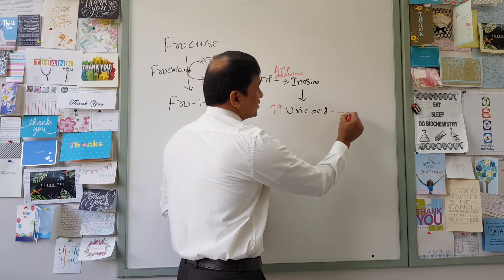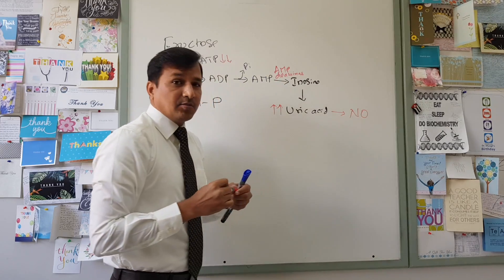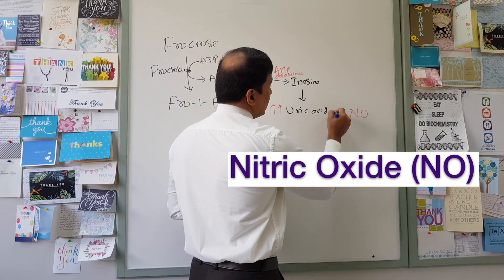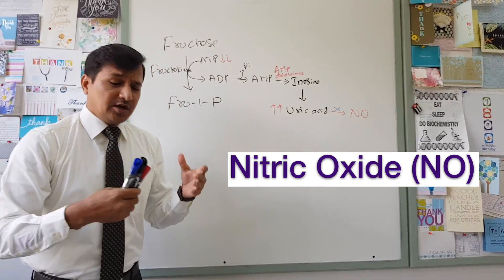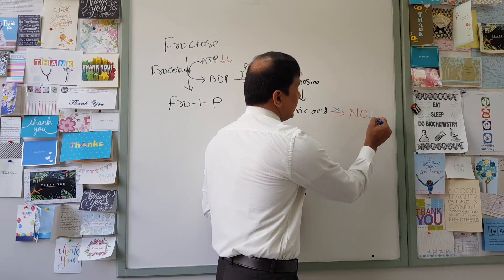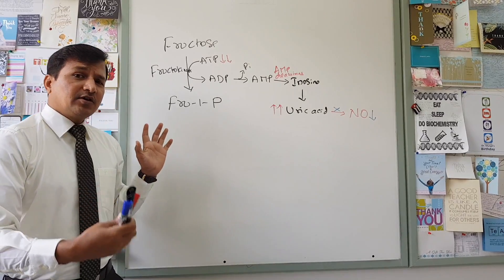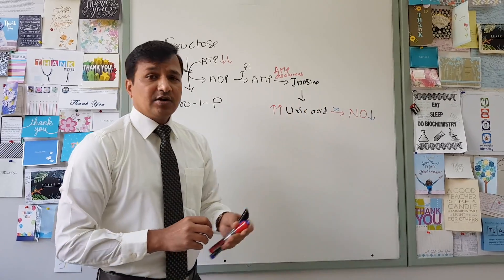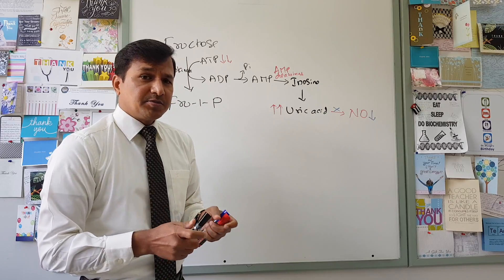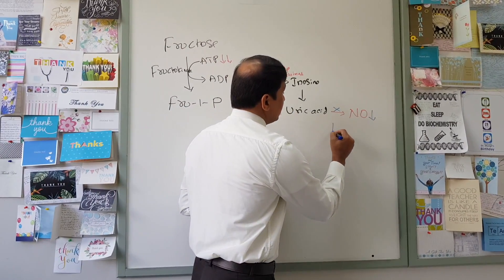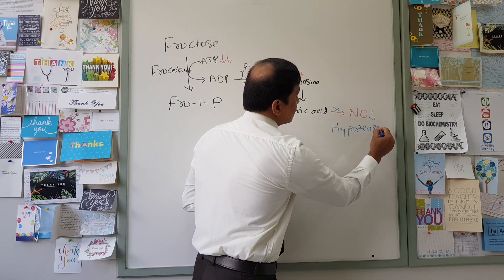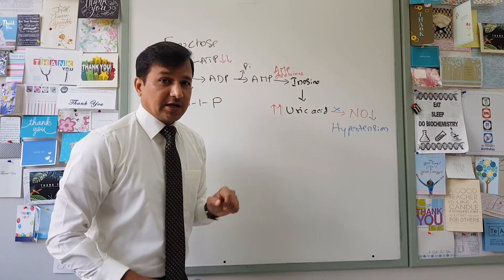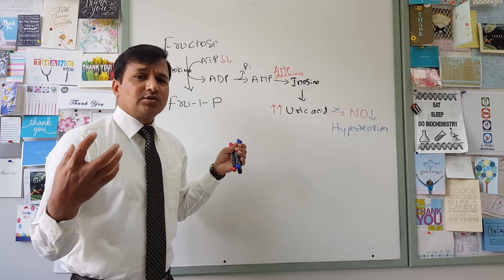As a result, uric acid levels rise in the blood — a condition called hyperuricemia. Excess uric acid has a negative effect on nitric oxide synthesis, decreasing nitric oxide levels. Since nitric oxide is an important vasodilator, its reduction can lead to hypertension. This is one hypothesis for why uric acid causes hypertension, which is part of metabolic syndrome. Excess uric acid can also lead to gouty arthritis.